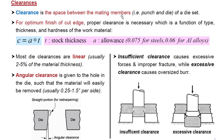Clearance is a function of type of material, thickness of material, and hardness of the work material. We calculate clearance as the product of allowance multiplied by stock thickness t. Normally the allowance is 0.075 for steels and 0.06 for alloys — that is 6% to 7.5% of the material thickness. Most die clearances are linear, usually in the range of 2 to 5 percent of the material thickness. Sometimes angular clearance is also given to allow material to be easily removed from the die hole.